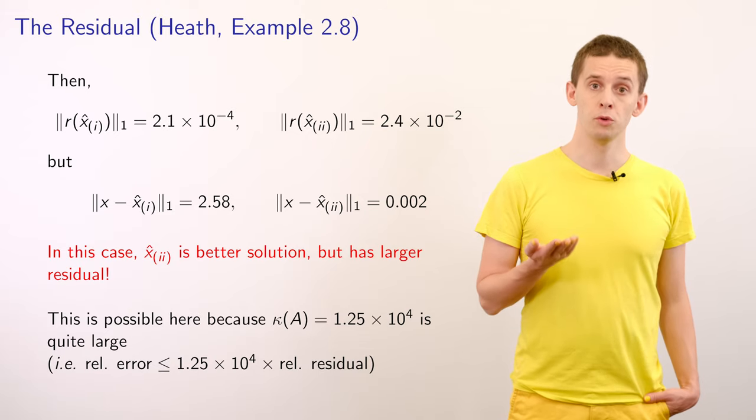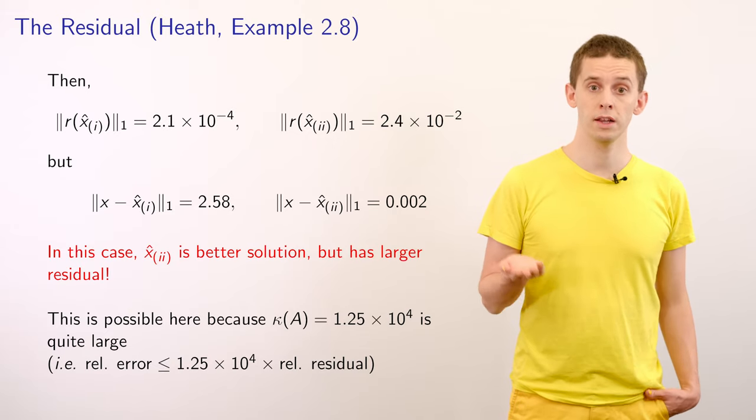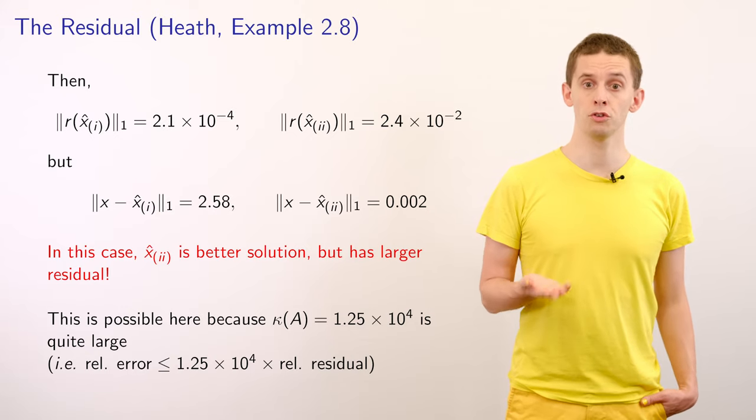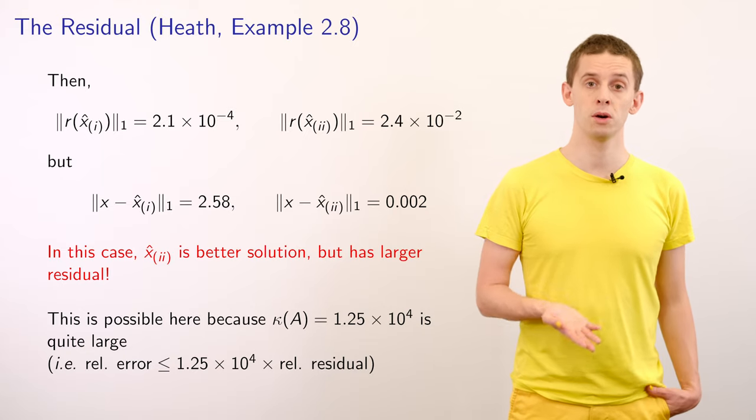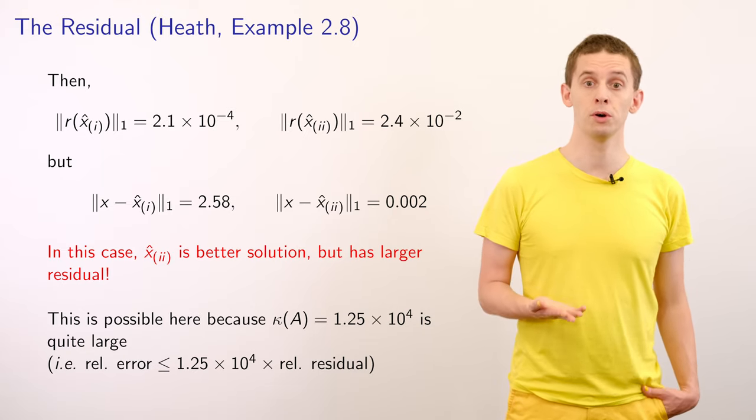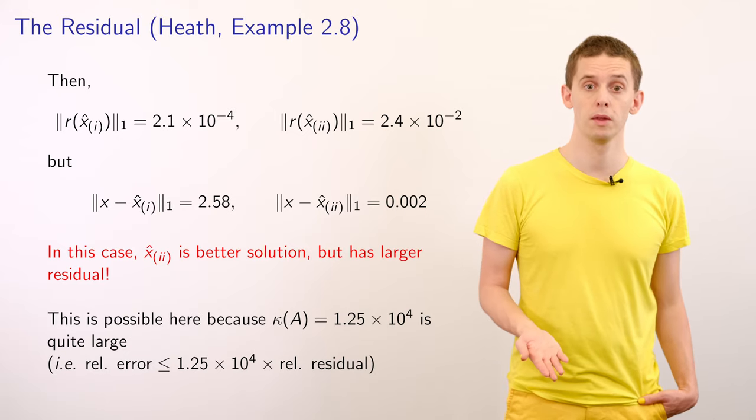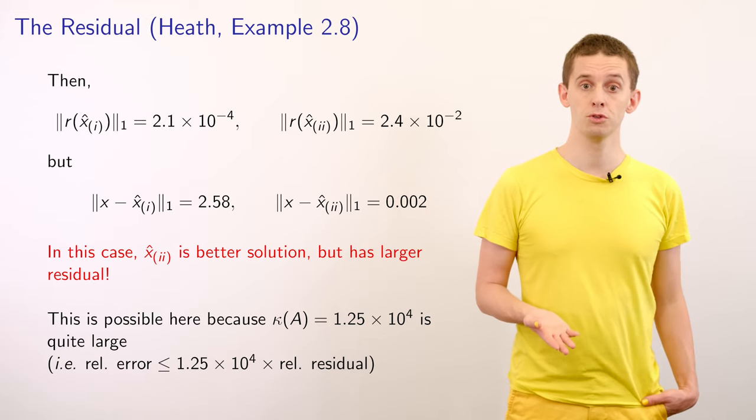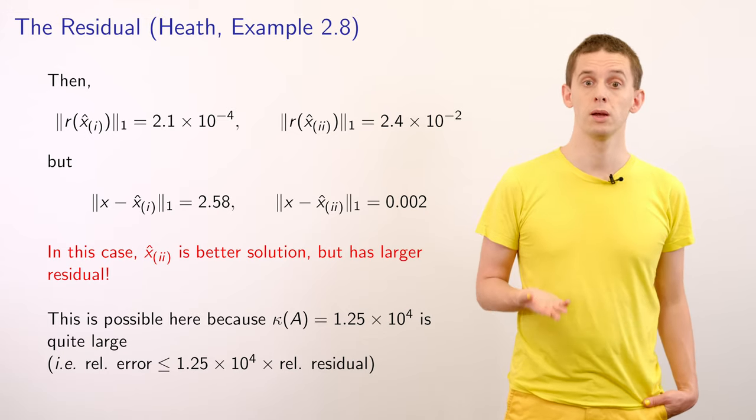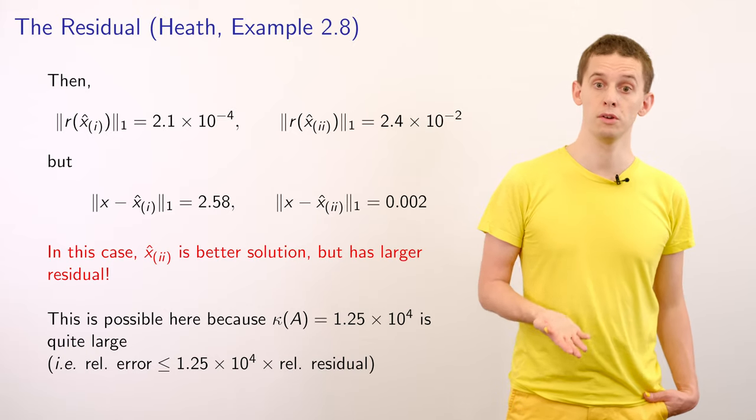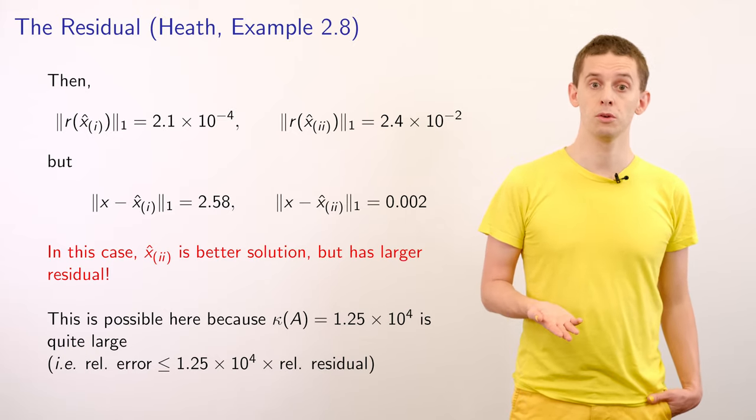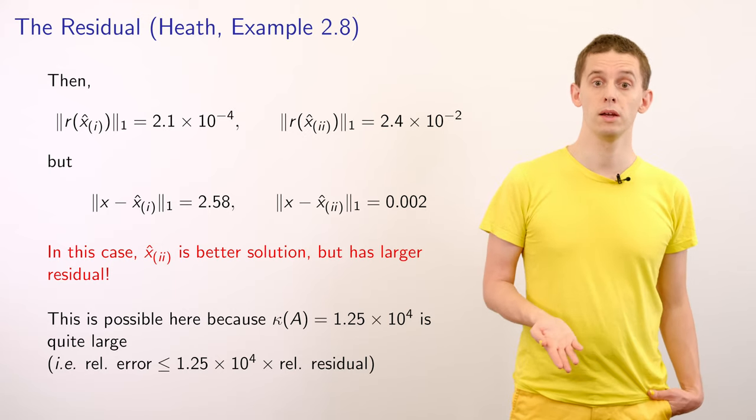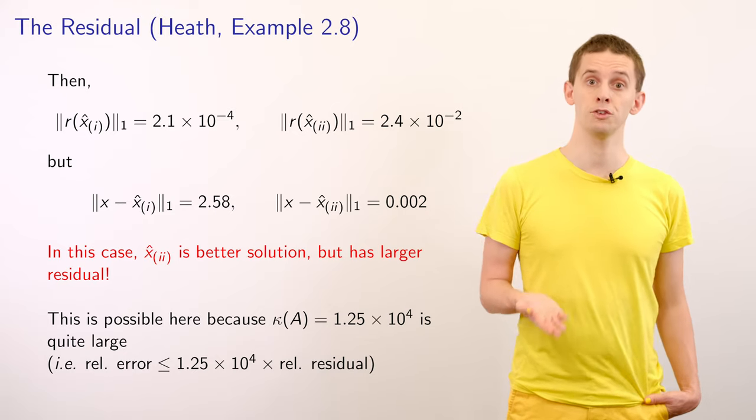Now if we look at the residuals for these two cases we find that the residual for our first proposed solution is equal to 2.1 × 10⁻⁴ whereas our residual for the second solution is equal to 2.4 × 10⁻². But we see here that the Δx for our first solution is 2.58 whereas the Δx for our second solution is 0.002. And we see therefore that even though the second solution x̂₂ is the better solution it has a larger residual.